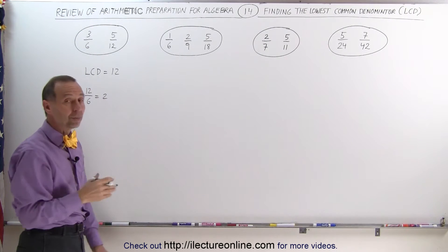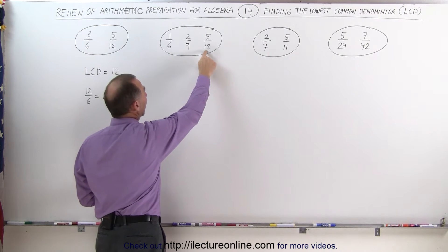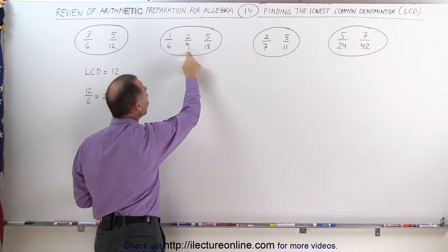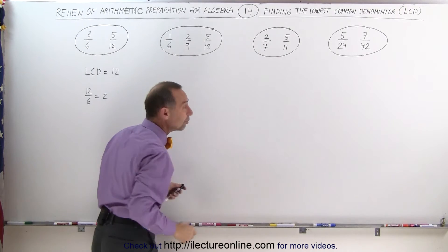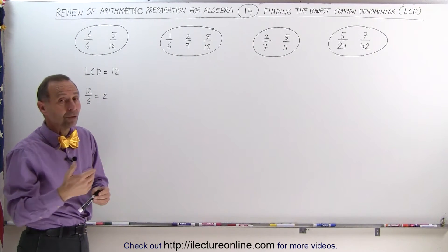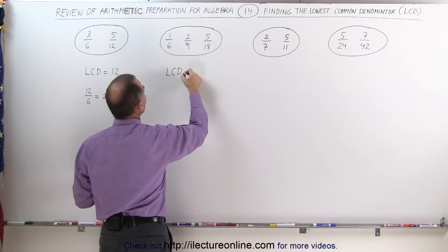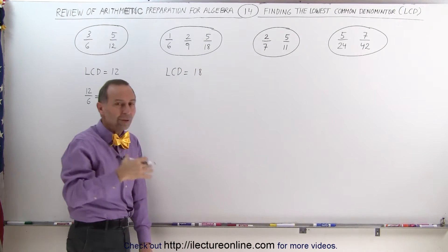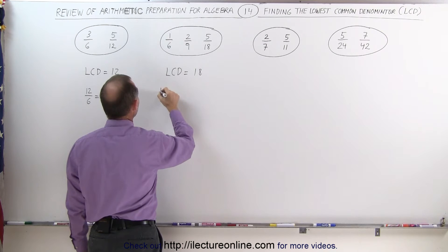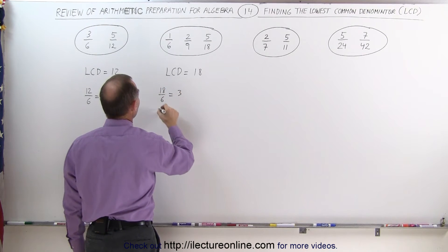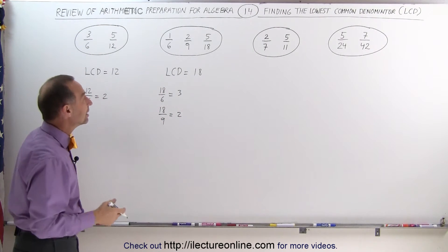Looking at the next set, we have a similar situation. Even though there are three fractions, notice that the largest of the three denominators — 18 — is such that the other two fit evenly into it. 6 fits evenly into 18, and 9 fits evenly into 18, which means the largest of the three denominators becomes the LCD. The LCD is equal to 18. To check: 18 divided by 6 is 3, and 18 divided by 9 is 2 — both integer numbers — which verifies that 18 is indeed the LCD.